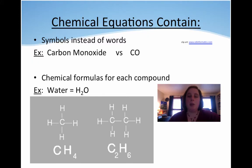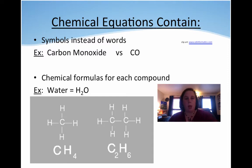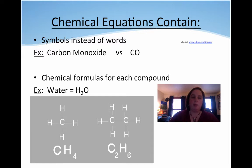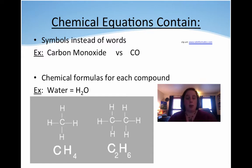What do chemical equations contain? They contain symbols instead of words — we would never write out 'carbon monoxide,' we would always just write CO. It always gives you the chemical formula for each compound. If you're talking about water, you write H2O. CH4 is methane, so you write it as CH4. You would never actually write it all the way out.